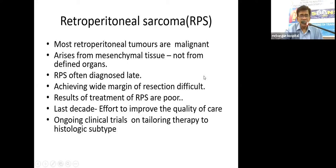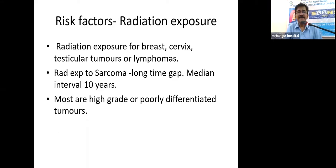Results of treatment of retroperitoneal sarcoma have been poor, but in the last few decades there has been effort to improve quality of care. There have been breakthroughs in specific diagnosis with immunohistochemistry and gene analysis, and ongoing clinical trials have tailored therapy based on histological subtypes.